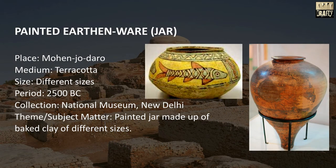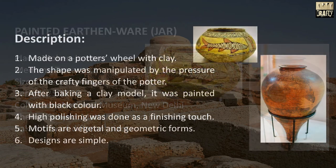Painted Earthenware or Jar. Place: Mohenjodaro. Medium: Terracotta. Size: different sizes. Period: 2500 BC. Theme or subject matter: painted jar made up of baked clay of different sizes. Made on a potter's wheel with clay, the shape was manipulated by the pressure of the crafty fingers of the potter. After baking, it was painted with black color. High polishing was done as a finishing touch. Motifs are vegetal and geometric forms; designs are simple.